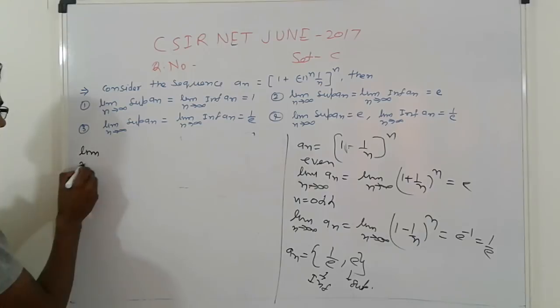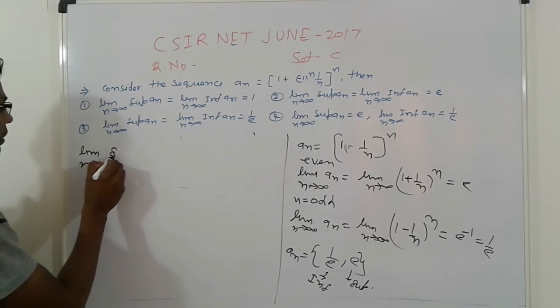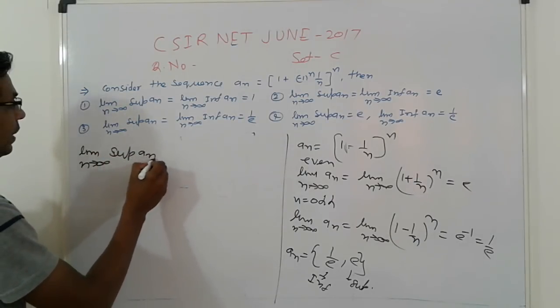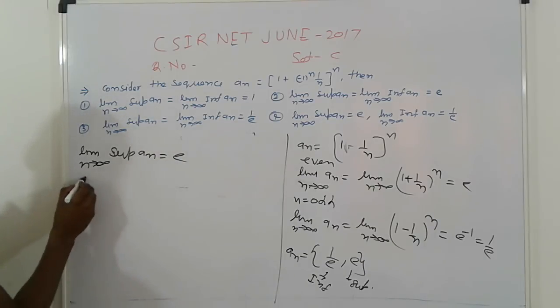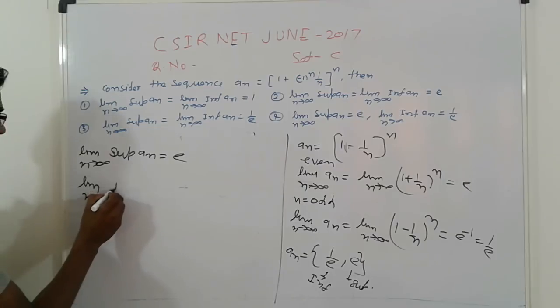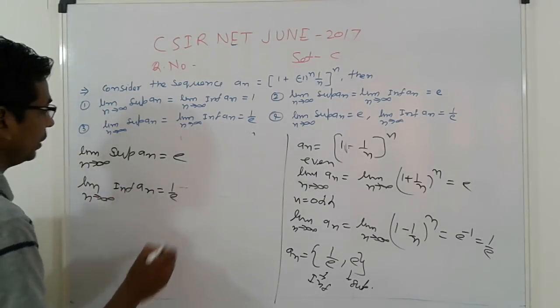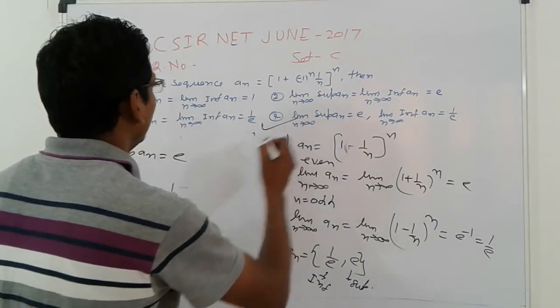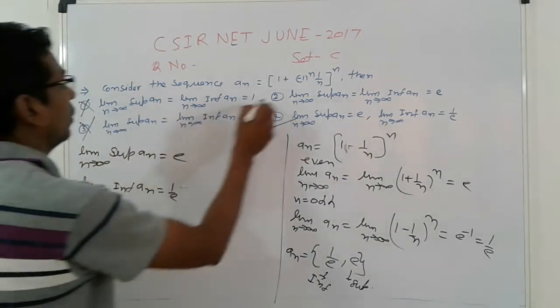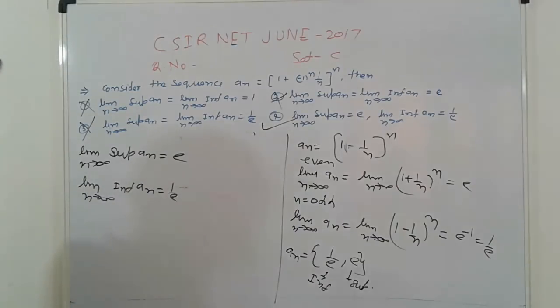This is the limit. Limit n tending to infinity supremum of An is equal to e. And limit n tending to infinity infimum of An is equal to 1 upon e. So that answer is true and another is wrong. Simple.